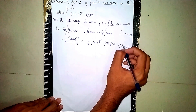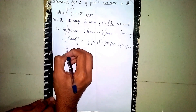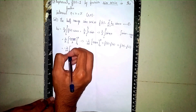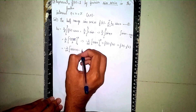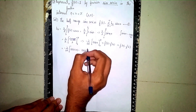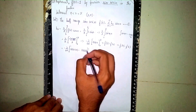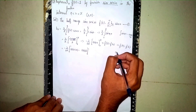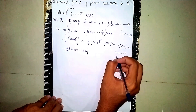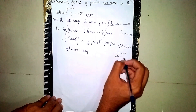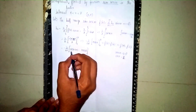Now apply the limits: f(b) minus f(a), where b = π and a = 0. Substitute x = π and x = 0. Always remember: cos(nπ) = (-1)^n, and cos(0) = 1.